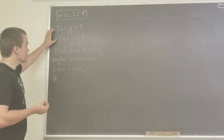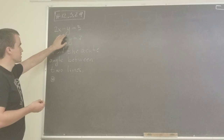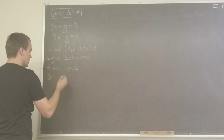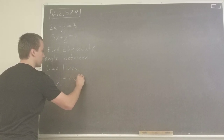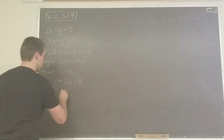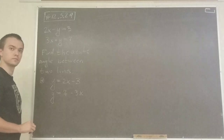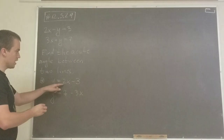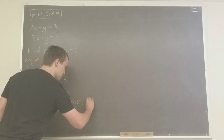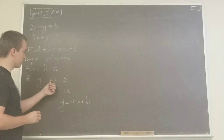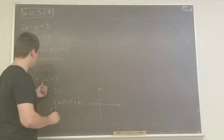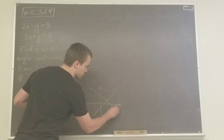Before we create vectors we need to find some points, but first I want to analyze this problem. We have two lines, so let's express each in terms of y. For the first one, moving y to the right and 3 to the left, we get y equals x minus 3. For the second one, moving 3x to the right, we get y equals 7 minus 3x. These two lines are not parallel because the general equation of a line is y equals mx plus b, where m is the slope. One line has a positive slope and the other has a negative slope.